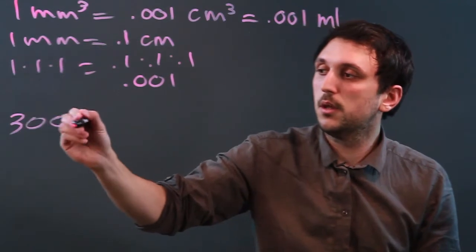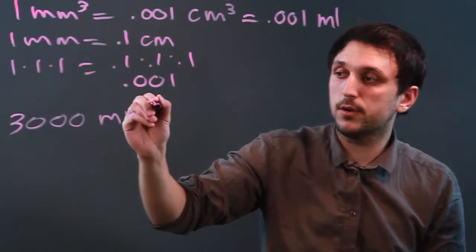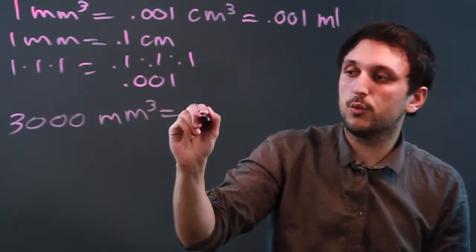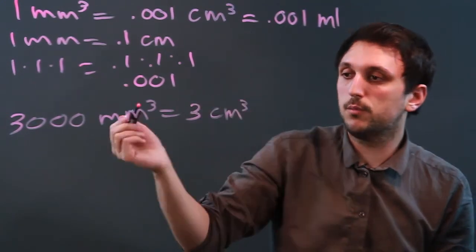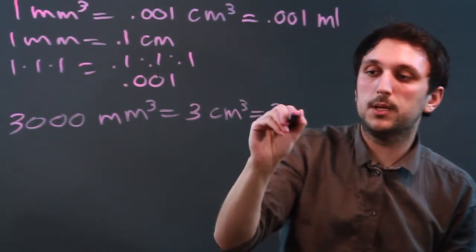So, if we had 3,000 millimeters cubed, that would be equal to 3 centimeters cubed, or 3 milliliters.